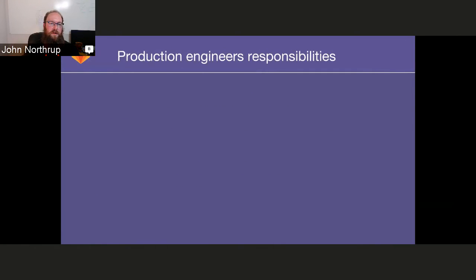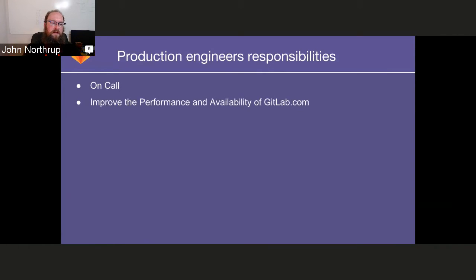Here's where we start getting into the cool part. What do we do and how are we doing it with GitLab? First, we're the on-call team — when the site goes down, we pick up the fire buckets and go to work. We also improve performance and availability. For us this is GitLab.com; for other production engineers it's typically their site or SaaS product. These are the folks making sure the site runs fastest, most reliably, and that they're continuously improving.